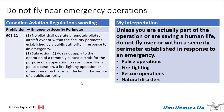The first one is 901.12: do not fly near emergency operations. Unless you're actually part of the operation or are saving a human life, do not fly over or within a security perimeter established in response to an emergency. This includes things like police operations, fire fighting, rescue operations, and natural disasters. Many of these are very tempting operations to film — don't do it unless you're actually part of the operation. Stay out of the way of these brave men and women who are trying to save lives.